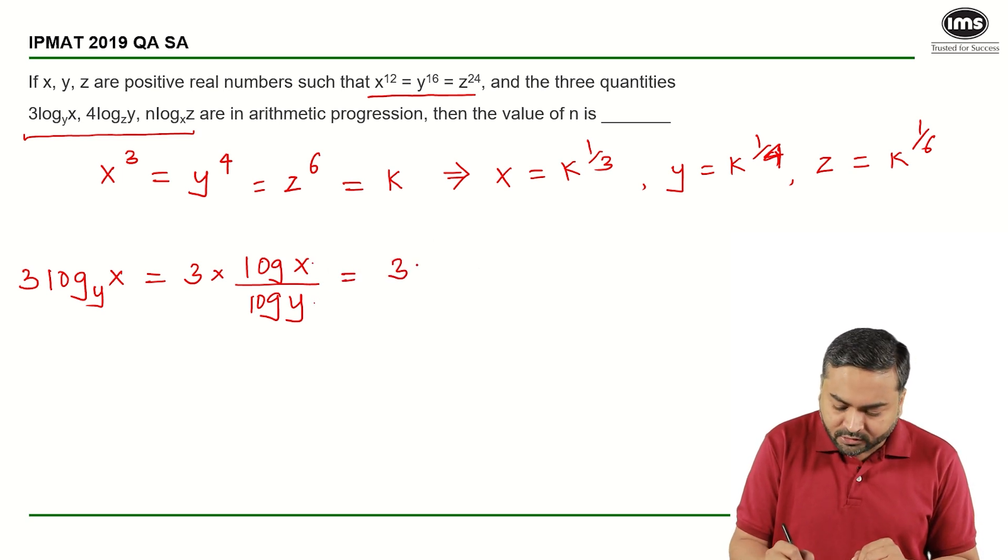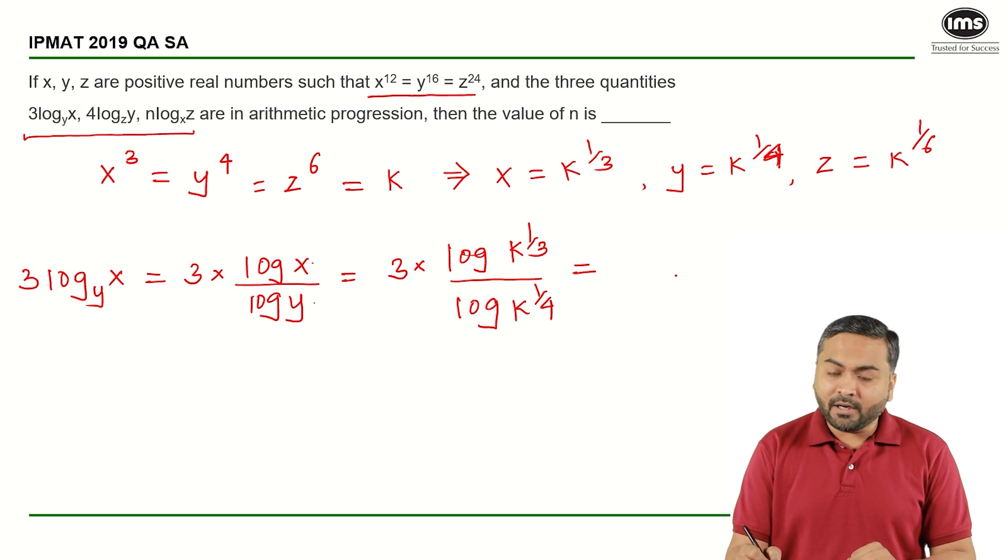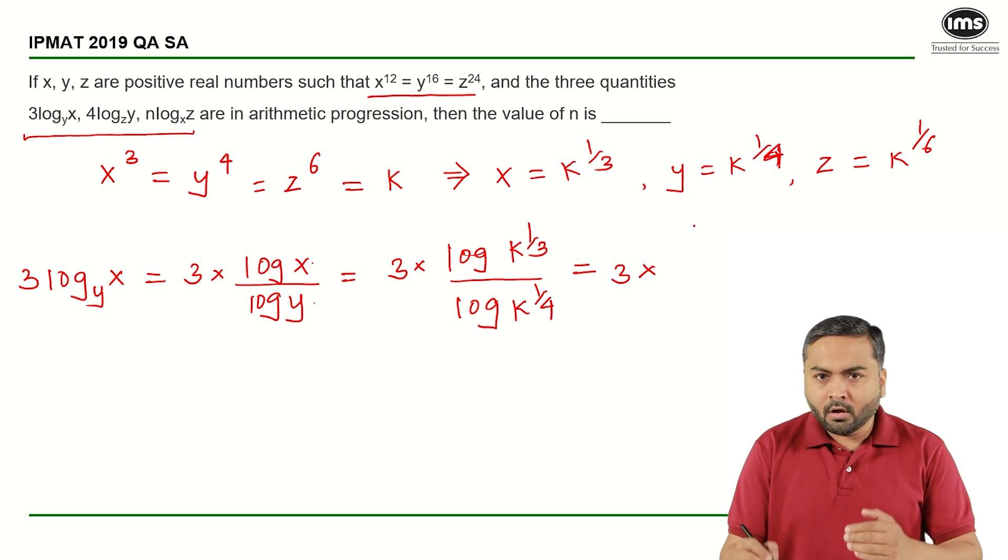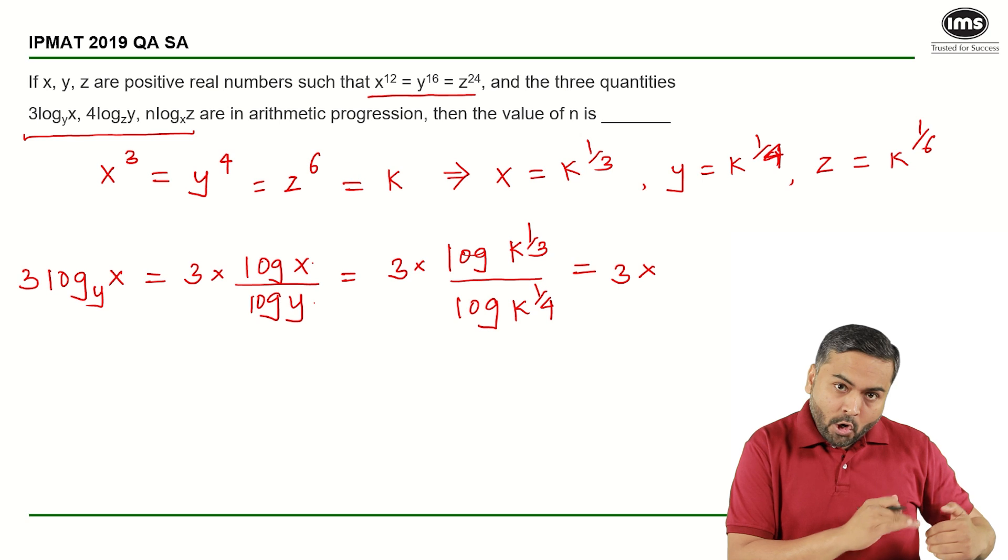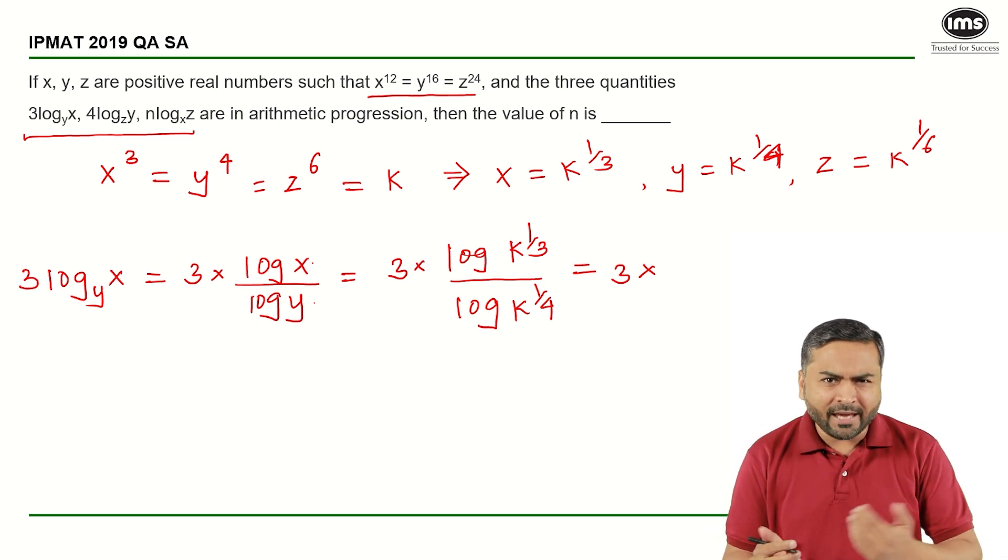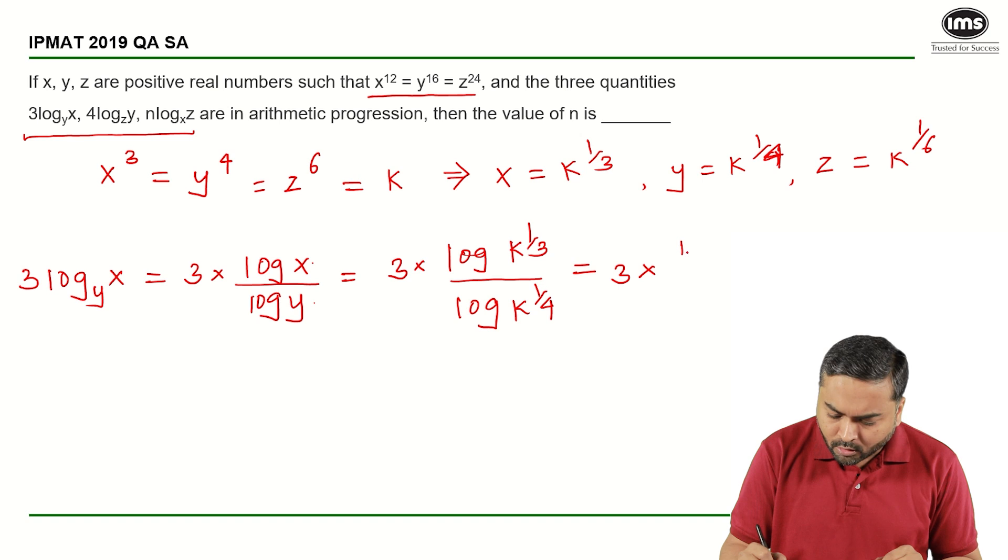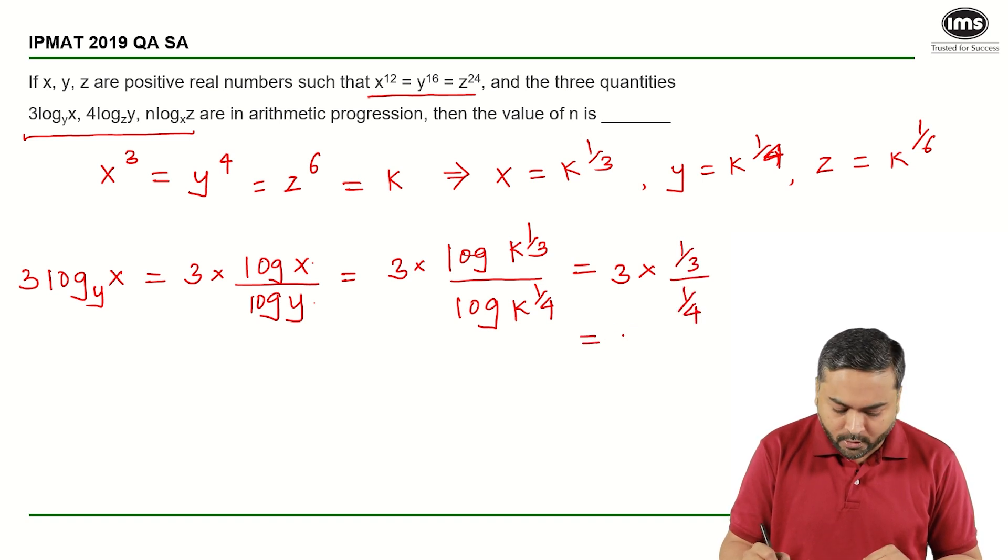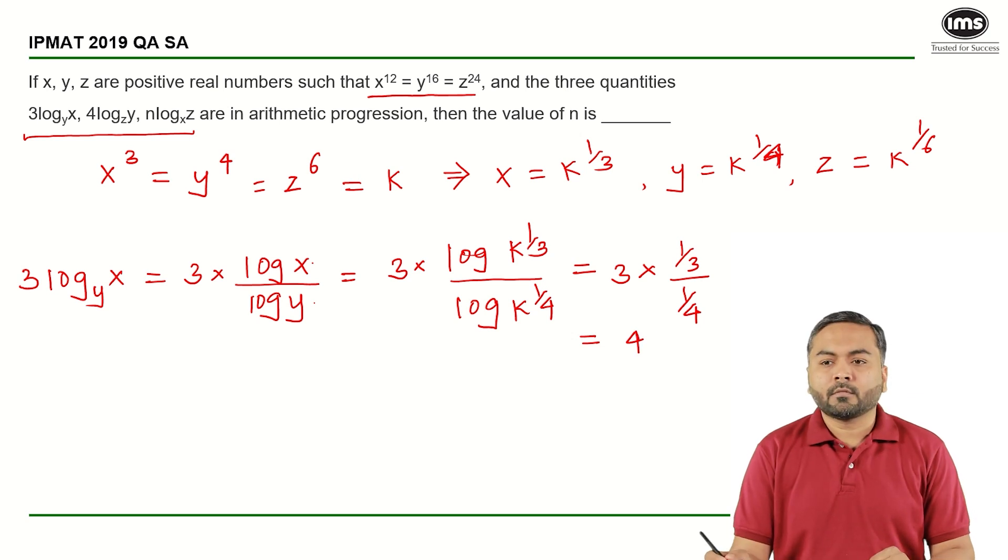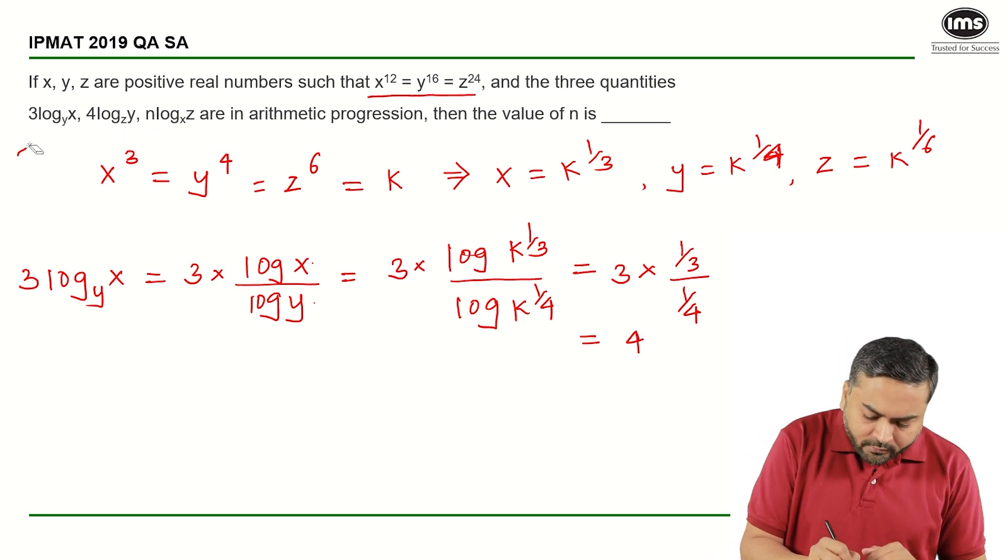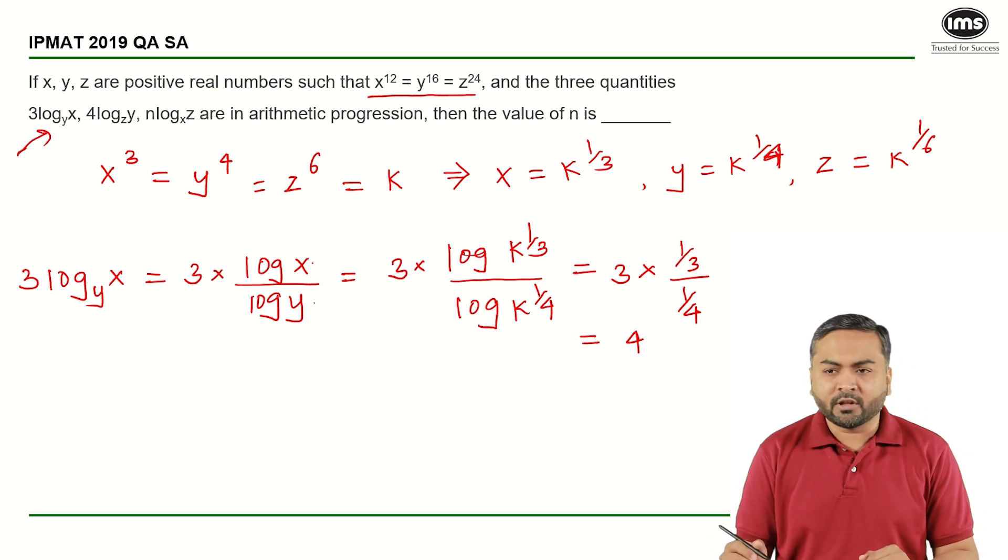So if I substitute the value of x and y here, what will I get? It's 3 times log of k raised to 1 by 3 upon log of k raised to 1 by 4, which will be nothing but 3 times 1 by 3 log k upon 1 by 4 log k. Log k gets cancelled out, so I can say it is 3 times 1 by 3 upon 1 by 4, and on simplifying I will get this as equal to 4.